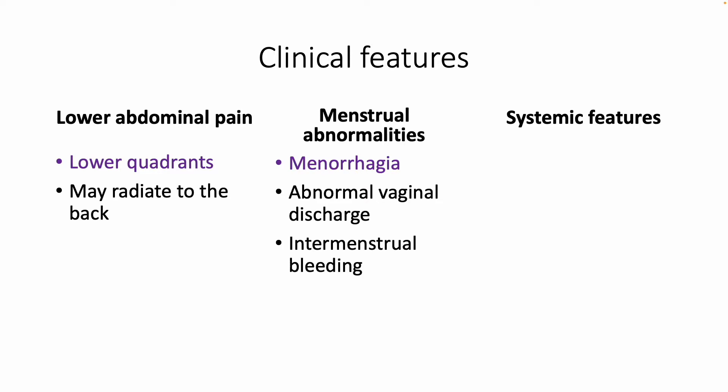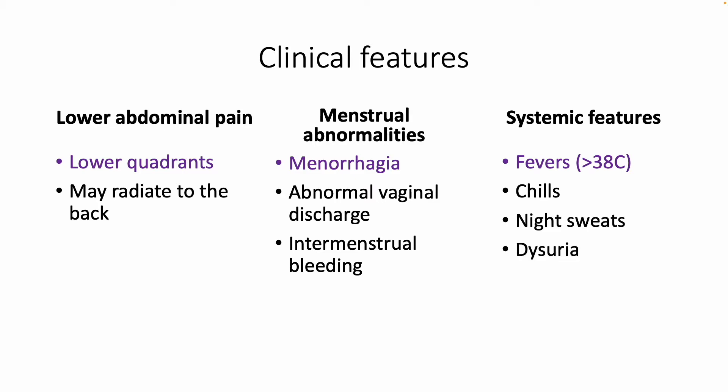Some of the systemic features to be aware of are fevers, particularly those over 30 degrees Celsius, as well as other typical features of an infection such as chills and night sweats. However, in some cases patients will also complain of dysuria.